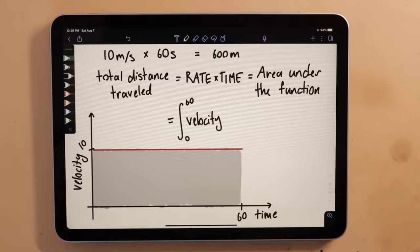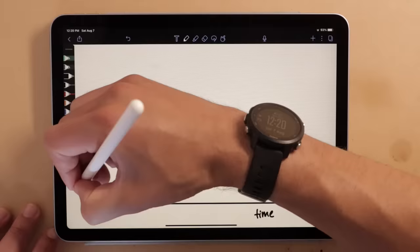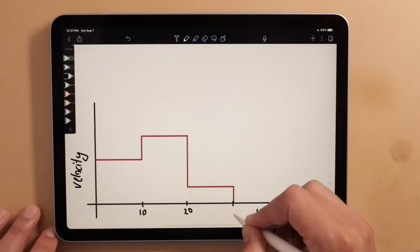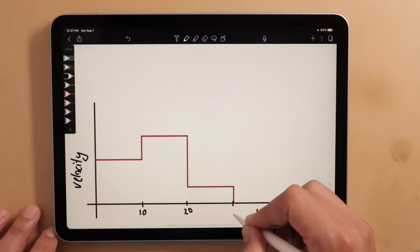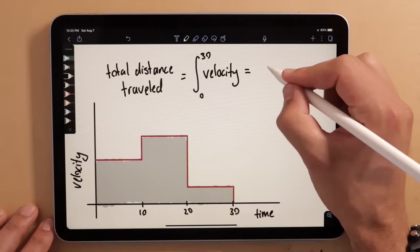This holds true for any velocity function. Imagine that our car traveled at three different speeds over the course of 30 seconds. The total distance traveled is still the integral of velocity, or the area underneath the curve. But now, instead of one simple rate times time calculation, the answer is actually a sum of three different rate times time calculations.